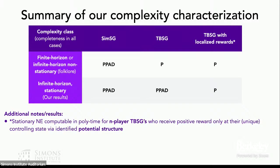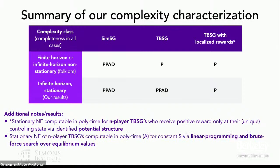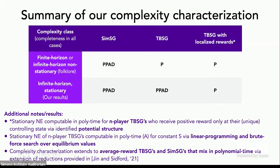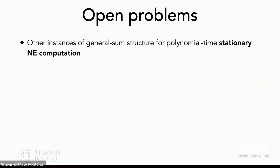We mostly discussed discounted models, but we do have extensions to average reward models. I want to advertise a paper by Yujiya and Aaron showing gentle mappings between average reward and discounted games. In terms of open problems: I think our hard instances are very specific and it would be nice to identify other instances where we get polynomial time computability. Looking at alternative solution concepts — maybe a little more complex in their representation but simpler than non-stationary equilibria — would be interesting. Learning questions outside of computation are interesting here. Membership in PPAD still assumed a polynomially bounded discount factor, and beyond that membership remains an open question.